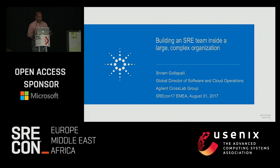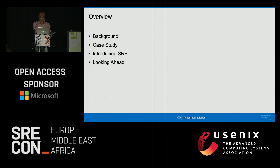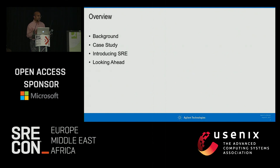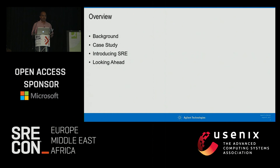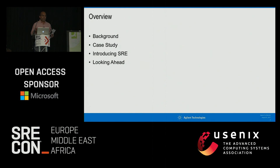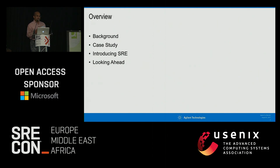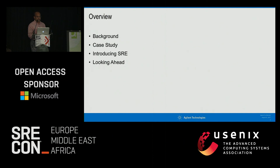A little bit about Agilent's history — I think it's relevant here. We have a slightly unique take on where we are and where we came from. We adapted a lot from the Google SRE book, which we've heard a lot about over the past several days. I adapted quite a bit of it to share and introduce what SRE was — this is kind of a primer for how we introduced SRE into our organization.